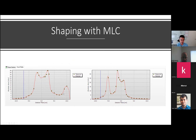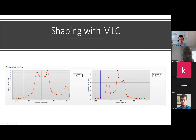Once you start using MLCs, you have a lot more control over how high or low your dose gets at specific points. This is a cross section from our Delta 4 IMRT QA device — you can see cross profiles from a single beam. If you add these up three-dimensionally across different beam angles, you can essentially deliver whatever you need to achieve your planning goals.